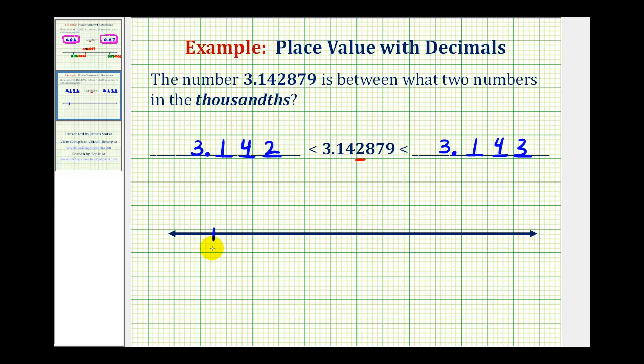So let's say 3.142 is here, or 3 and 142 thousandths. And let's say 3.143, or 3 and 143 thousandths, is here.